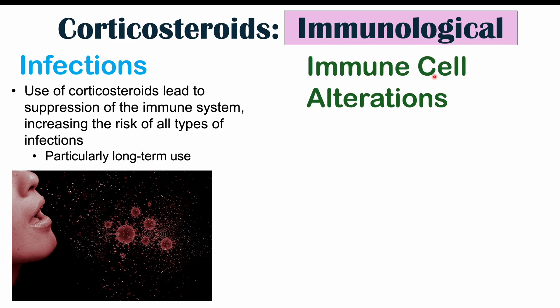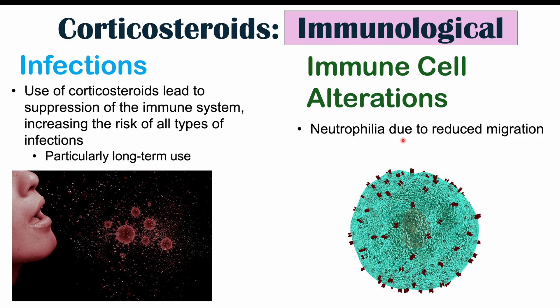We can also see other immune cell alterations, including neutrophilia — higher levels of neutrophils — and leukocytosis. The reason for higher neutrophil levels is corticosteroids' ability to suppress neutrophil adhesion molecules, which are used by neutrophils to exit the vasculature and enter interstitial spaces to deal with bacterial infections. So when blood is drawn, we see high neutrophil counts because of that reduced migration. We can also see eosinopenia — low eosinophil counts — as corticosteroids suppress eosinophil levels. Corticosteroids also lead to apoptosis of lymphocytes, especially T cells.